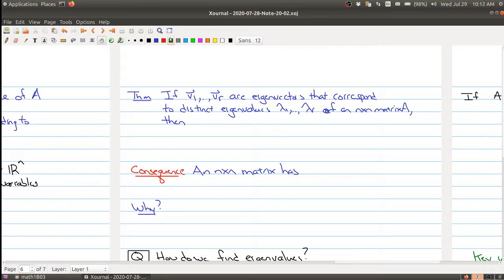Well, then the nice thing is that if you knew this condition, then the set of vectors v1 through vr is linearly independent. So eigenvectors coming from different eigenvalues form a linearly independent set.